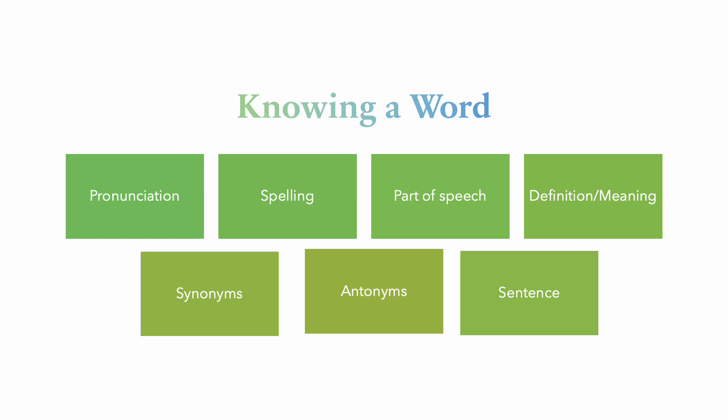Pronunciation — they know how to pronounce it. They know how to spell the word correctly. They know which part of speech the word is, they also know what it means, and they know synonyms — words that are similar to the word they know — and antonyms — words that are opposite of the word they know. And they know how to use the word when they speak and write a sentence.